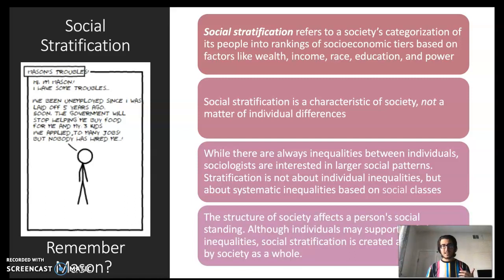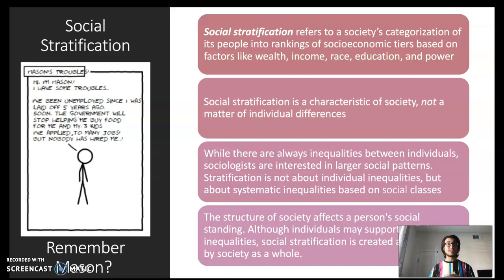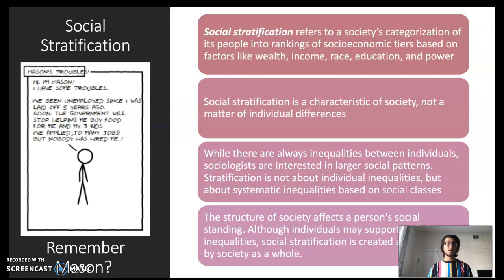The structure of society affects a person's social standing. Although individuals may support or fight inequalities, social stratification is created and supported by society as a whole. We as a society created this system of social stratification and these different social classes. We've created the laws and policies that are supposed to protect individuals and distribute wealth equally in the United States — but as we'll see today, the distribution of wealth in the U.S. is anything but equal.